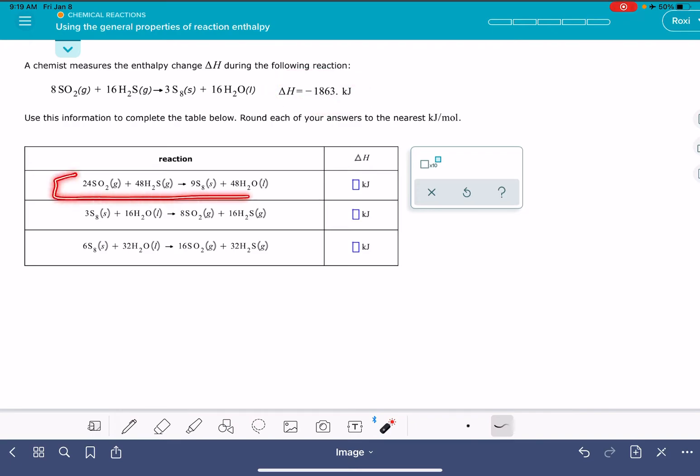For example, in this equation right here, we can see that all of the stoichiometric coefficients have been multiplied by three. And that means that we're going to multiply the value of delta H by three. So whatever we do to change the chemical equation, we're going to do the exact same thing to the value of delta H.